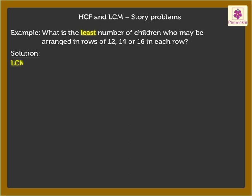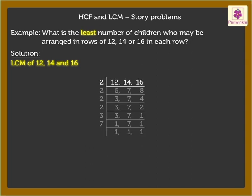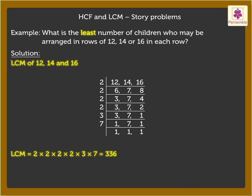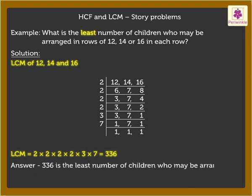So, let us find the LCM of 12, 14 and 16. The LCM is 2 × 2 × 2 × 2 × 2 × 2 × 3 × 7, which is equal to 336. So, 336 is the least number of children who may be arranged in rows of 12, 14 or 16 in each row.